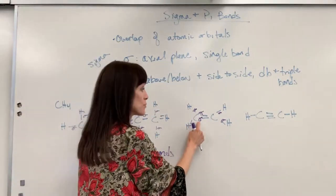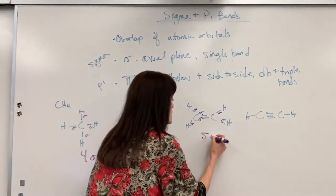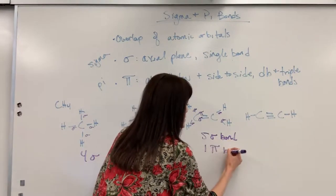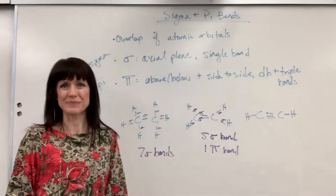Now I have a sigma for each of these single bonds. So if we count this up, I've got one, two, three, four, five sigma bonds and one pi bond.